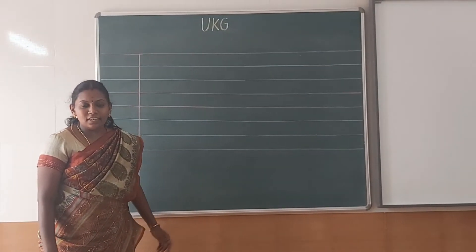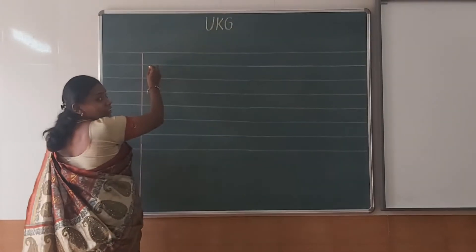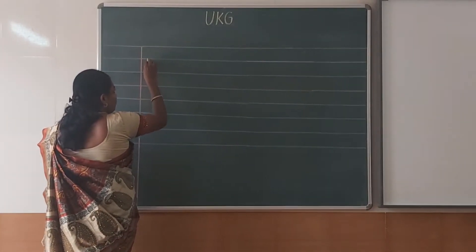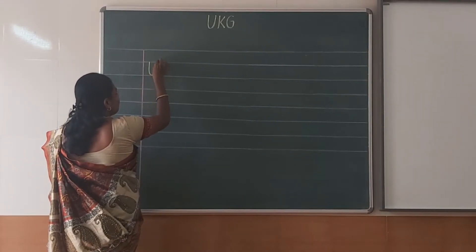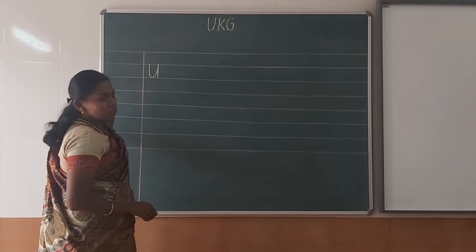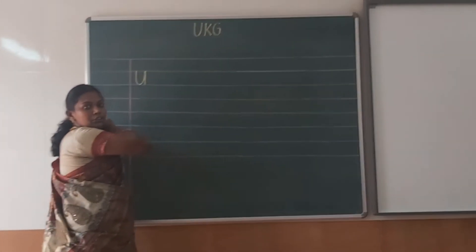Now I am going to see how to write letters from U to Z. See, when you are writing U, you must start from the line, write a curve and a standing line should come like this. Okay? See here that is like that you also must write. This is letter U.